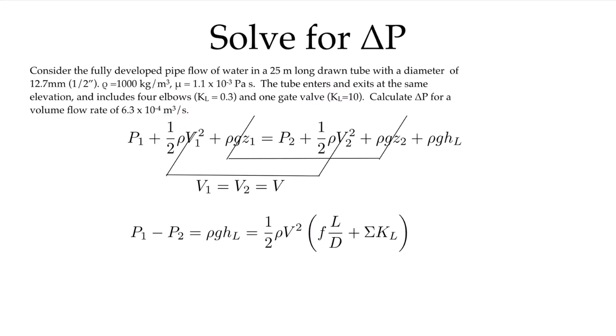So all this is the same as in the garden hose example, except now we're talking about a drawn tube. It's not smooth—we'll have to look up the roughness for a drawn tube—and we have to include our loss factors.